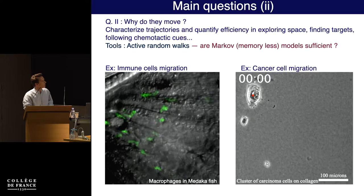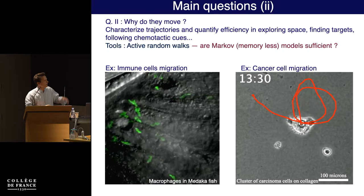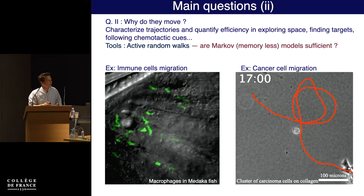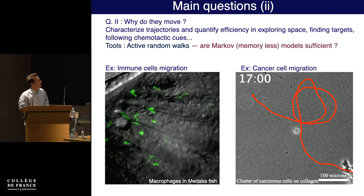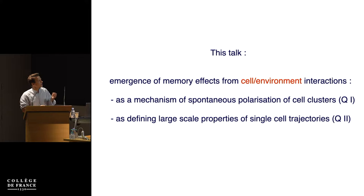You can also play that game for collective migration. That would be the second example: a blob of cancer cells lying on collagen gel, a very similar setup. You can devise random walk models to describe this trajectory and ask whether space exploration is done in an efficient way. More specifically in this talk, I'll put emphasis on cell-environment interaction, arguing this can lead to what I call memory effects. I want to discuss two effects: one directly impacts spontaneous polarization in cell clusters, and the second concerns large-scale trajectory properties triggered by such interaction.